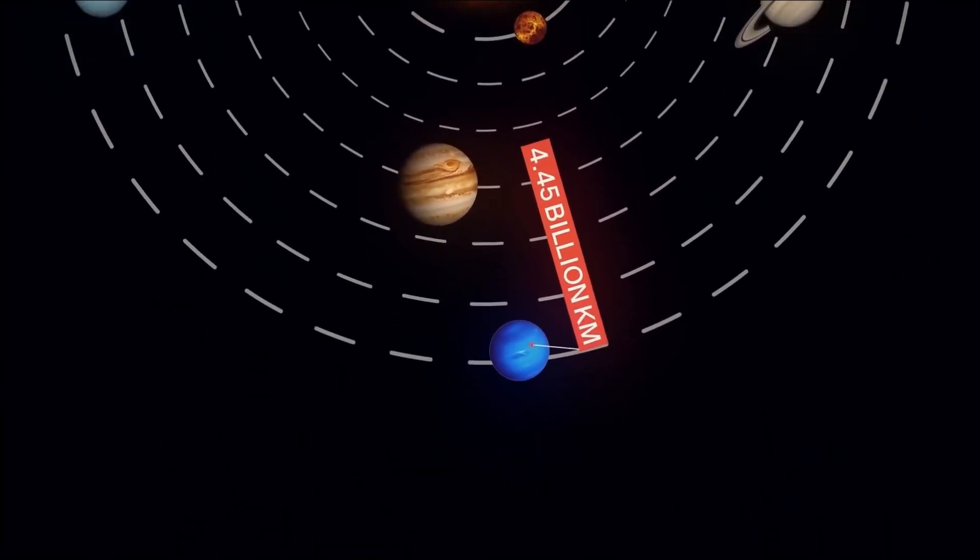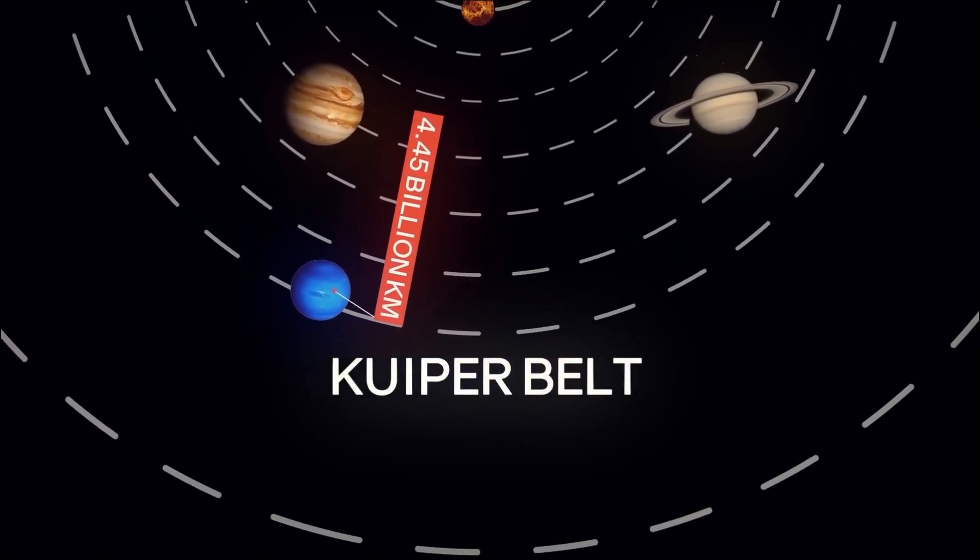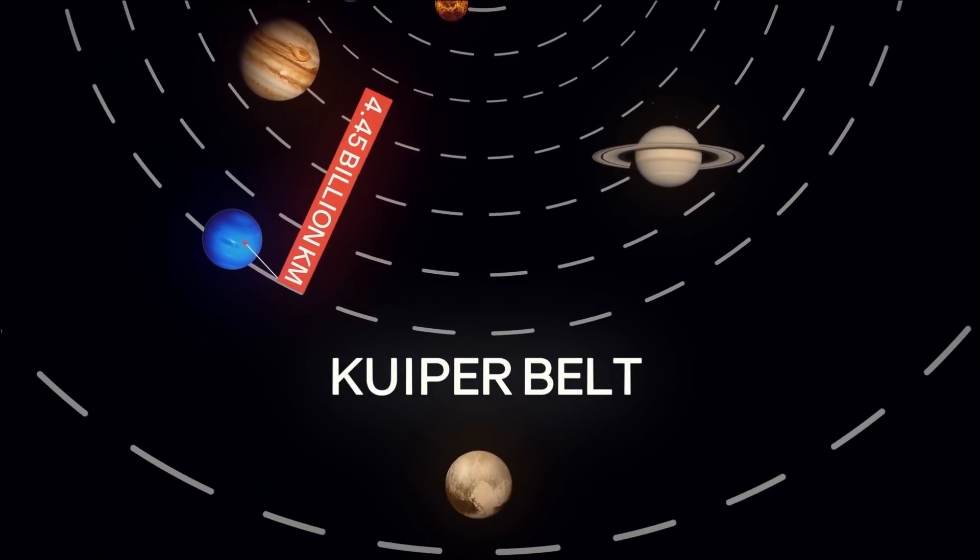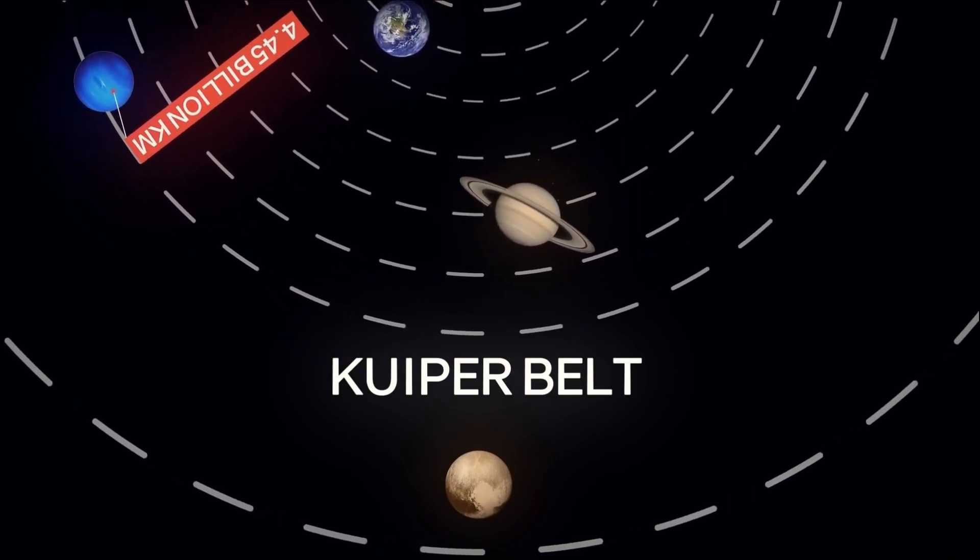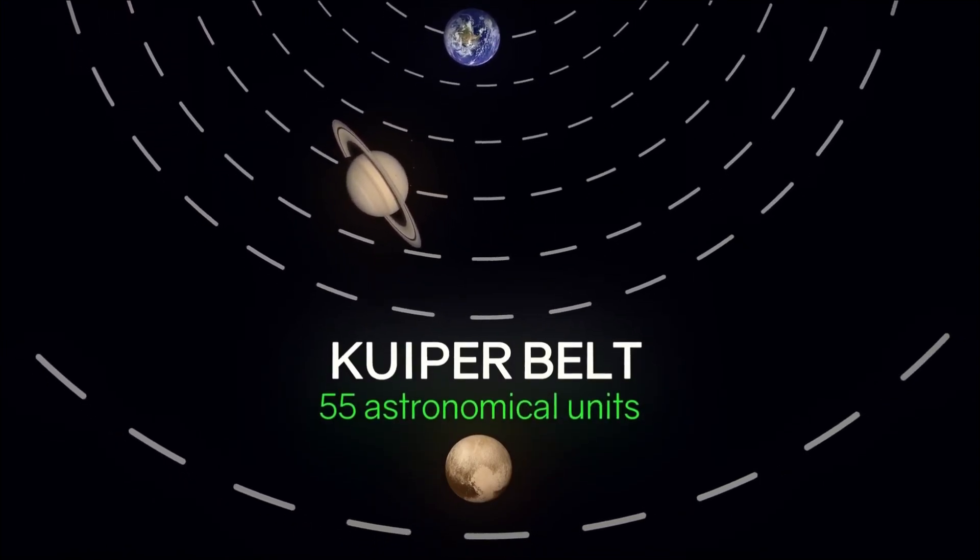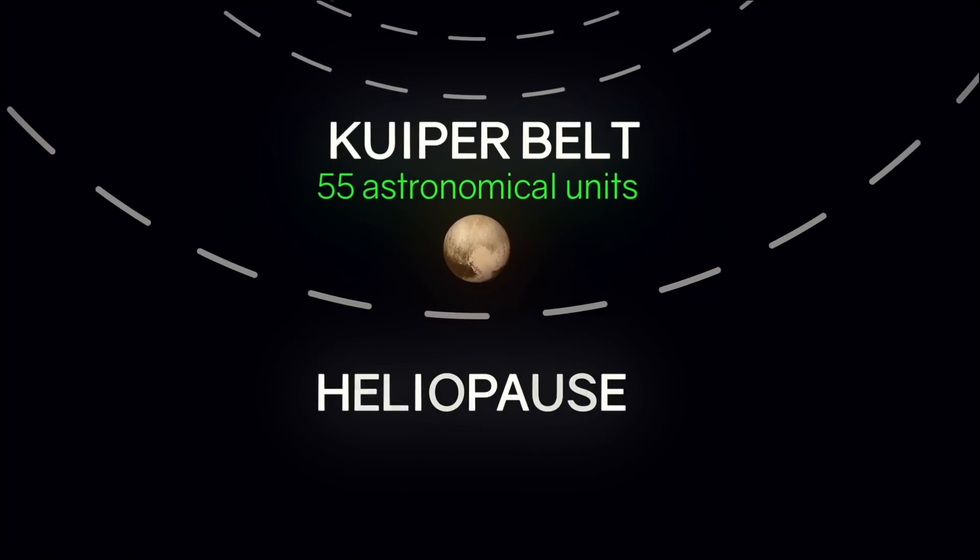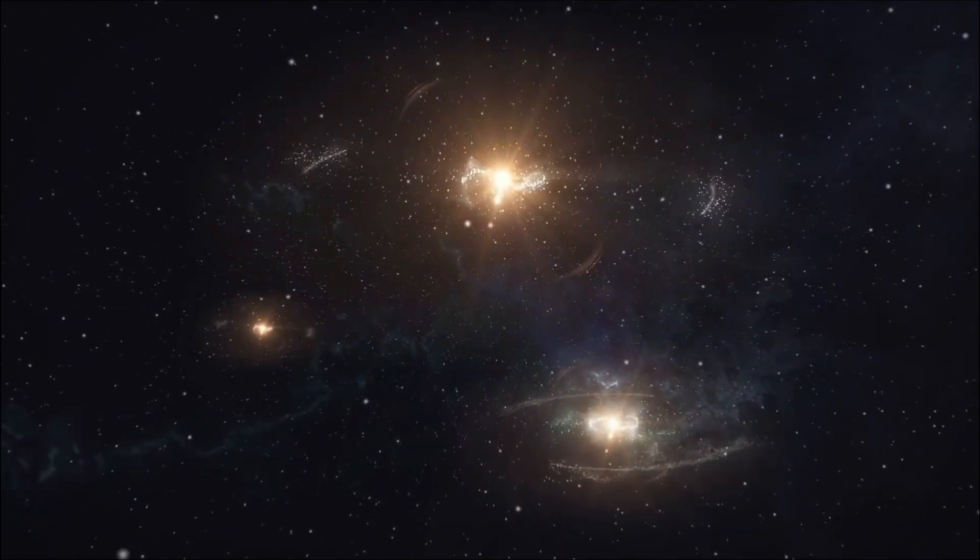Behind Neptune is the Kuiper Belt, a collection of small celestial bodies, the most famous of which is Pluto, which has long been considered a planet. The Kuiper Belt stretches out to about 55 astronomical units. Further, at a distance of 125 to 135 astronomical units, there is a heliopause, which we have already described. Let us now explain why the density begins to increase at its boundary.